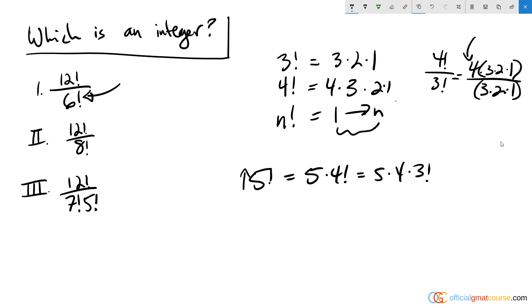We could represent 12 factorial as 12 times 11 times 10 times 9 times 8 times 7 times 6 factorial. And so this 6 factorial will cancel right out and we are left with a whole number on top, which is also known as an integer. The same idea applies here, so that means that this is also going to work.